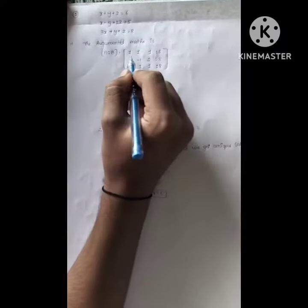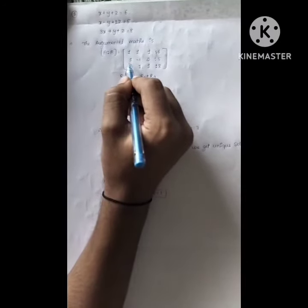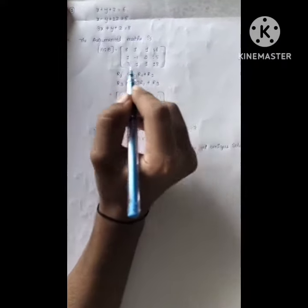The augmented matrix A is equal to 1, 1, 1 is to 6, and the second row is 1 minus 1, 2 is to 5, and the third row is 3, 1, 1 is to 8.